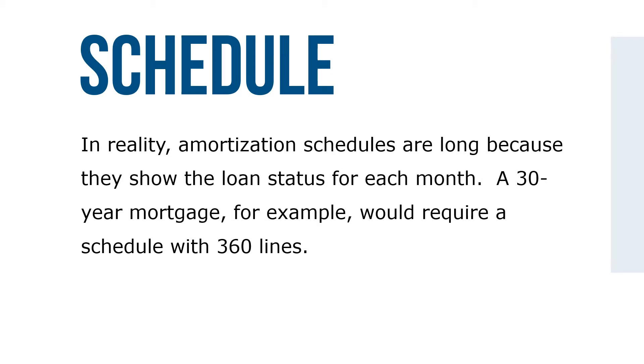In reality, amortization schedules are long because they show the loan status for each month. A 30-year mortgage, for example, would require a schedule with 360 lines.